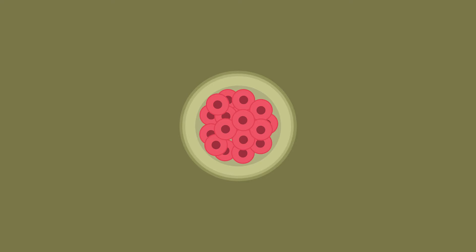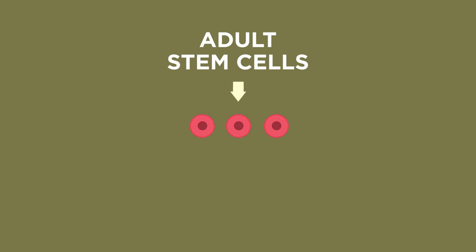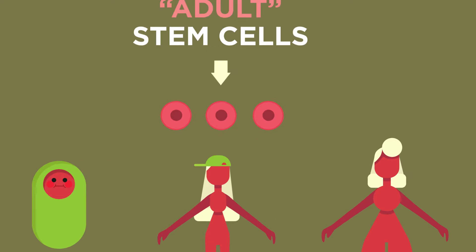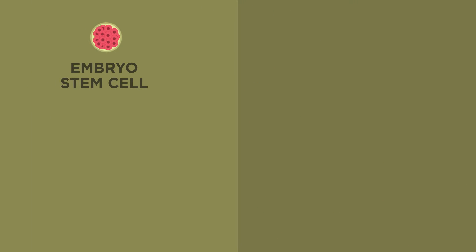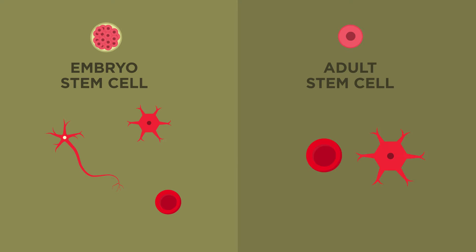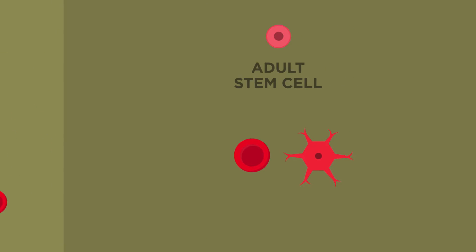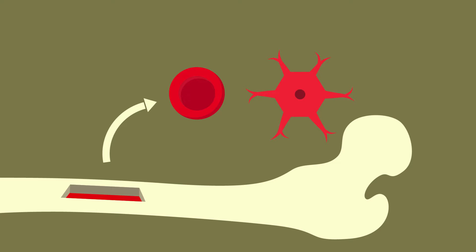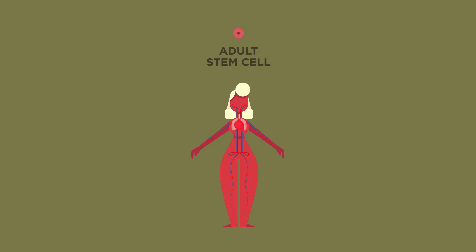Stem cells do exist past the embryo. They are called adult stem cells. Adult is a little misleading, as these stem cells are actually found in infants and children, as well as adults. Whereas embryonic stem cells can turn into any cell in the human body, adult stem cells are only capable of forming a few different types of cell. They typically form the type of tissue in which they are found. Adult stem cells maintain the body's tissues and organs.